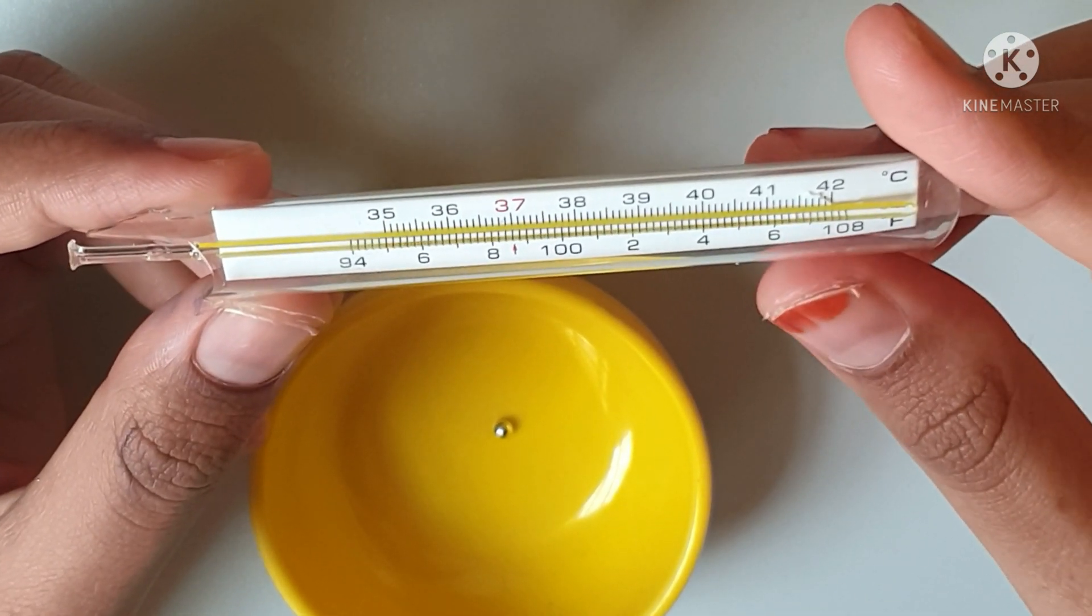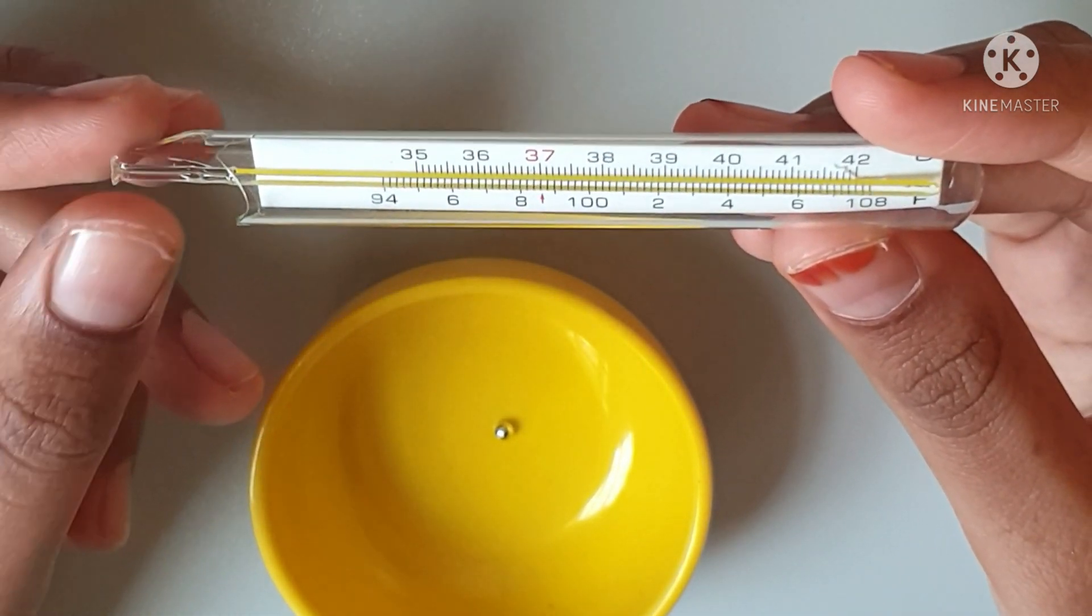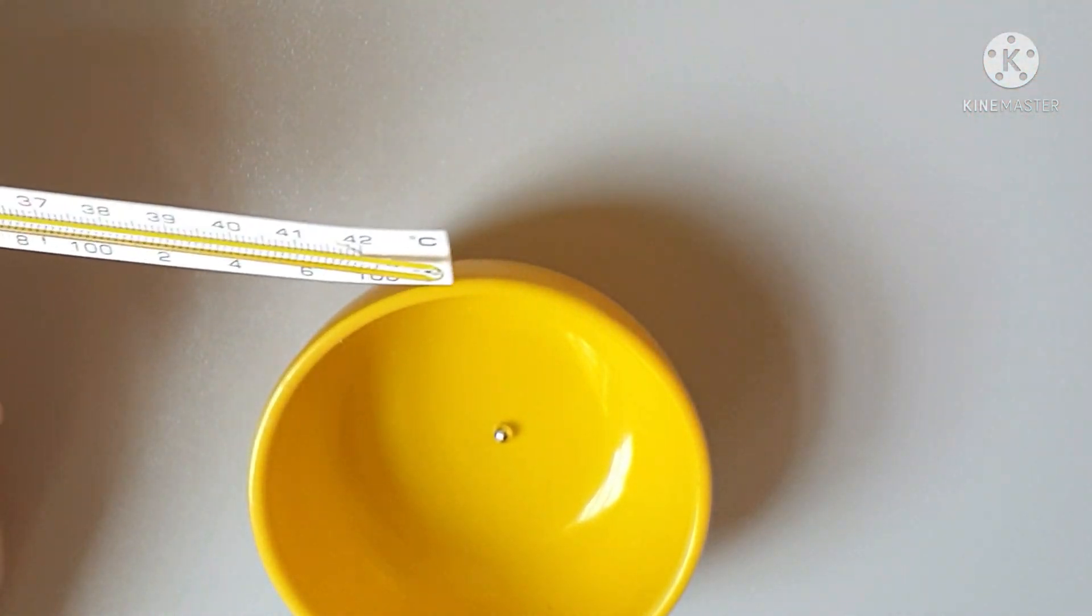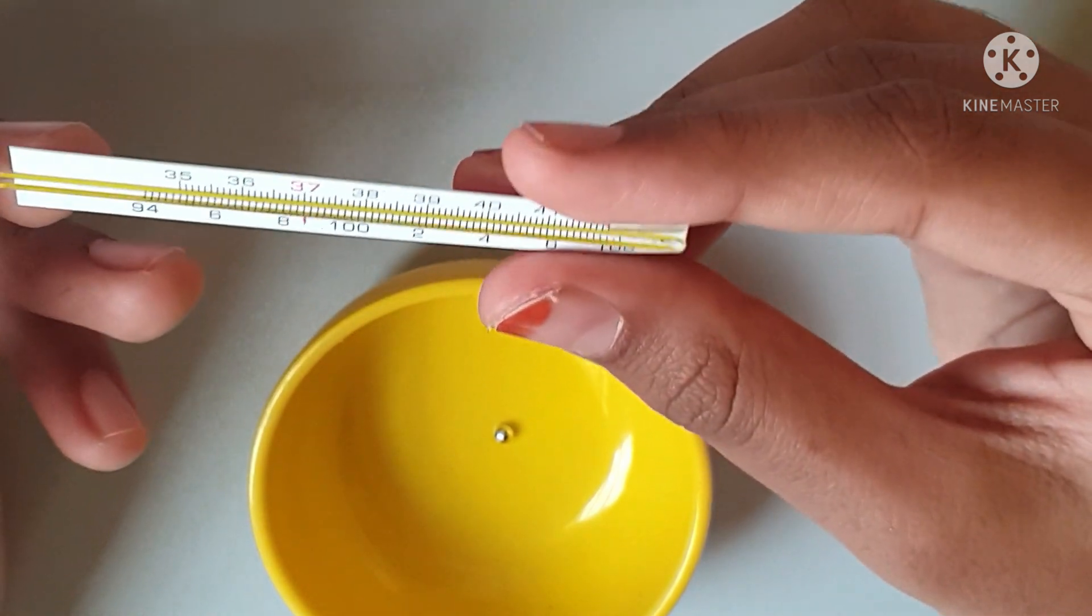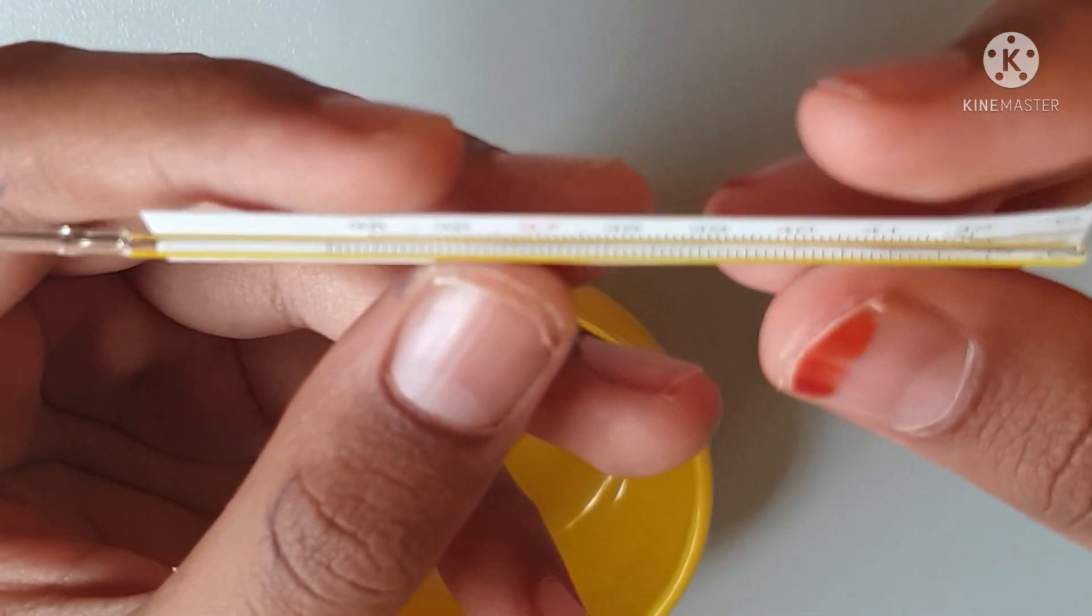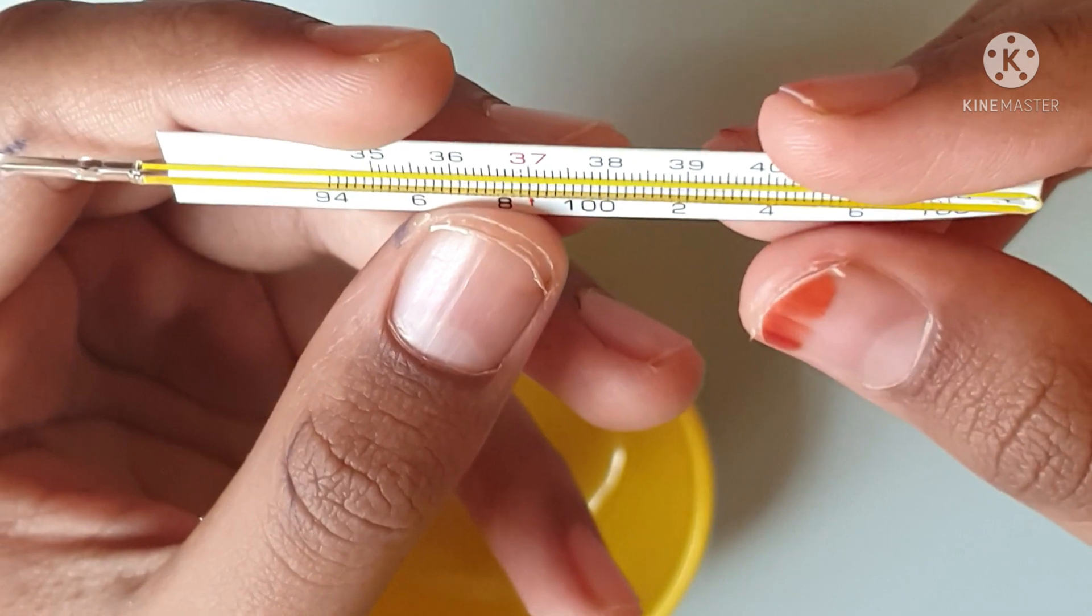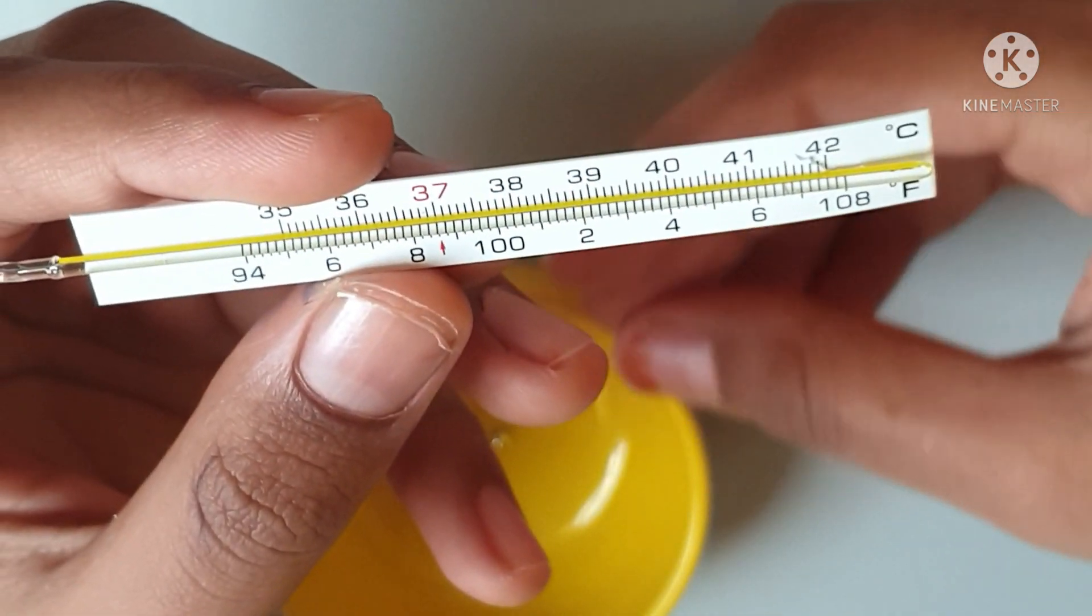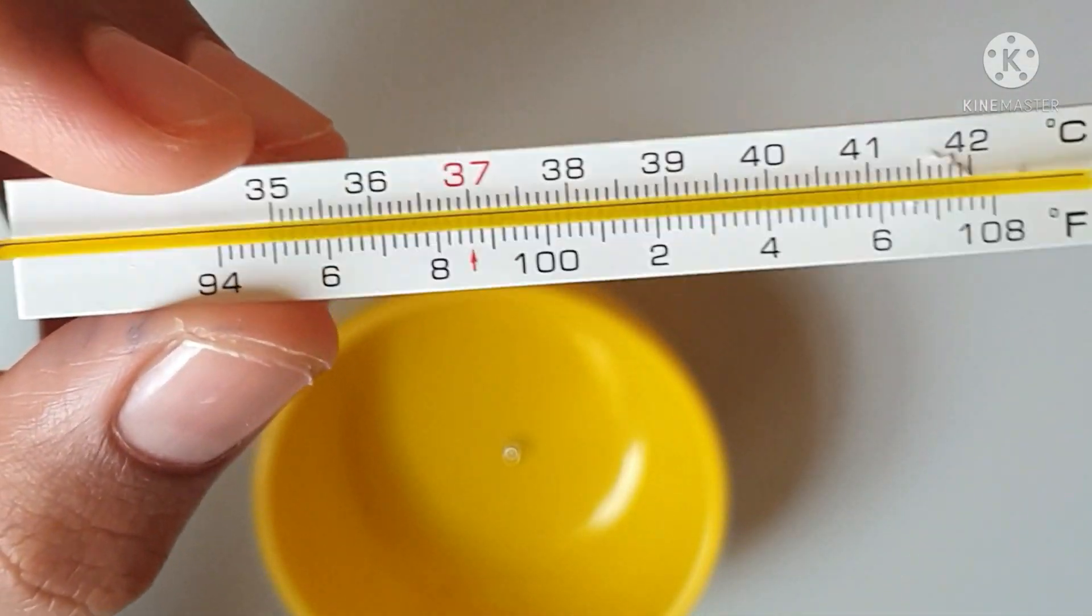Now I'm going to take out the parts. This is the bulb of the thermometer and this is the reading. Inside you can see the mercury - yes, in this yellow type line. That is also a small bulb, a very thin glass tube.